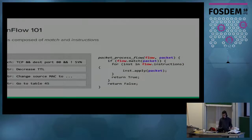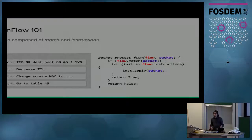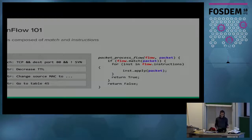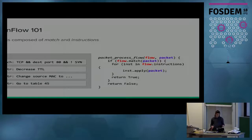Each flow is composed of two things. A flow has a match, which defines what packet the flow should apply to. OpenFlow allows you to do this based on L1 through L4 levels — you can say you want all IPv4 packets, or maybe just TCP packets targeted to port 80, or even all non-SYN packets coming into the switch. When a packet arrives at a specific table, the switch goes through all the flows in that table sorted by priority and tries to find the first one that applies.